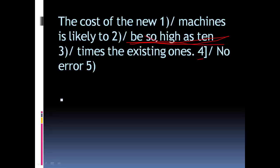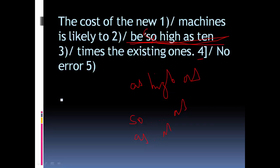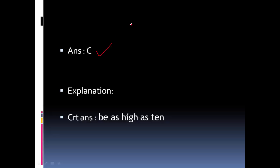The correct structure is 'as...as,' not 'so...as.' The corrected sentence is: 'The cost of the new machines is likely to be as high as 10 times the existing ones.' So the correct answer uses 'as...as.'